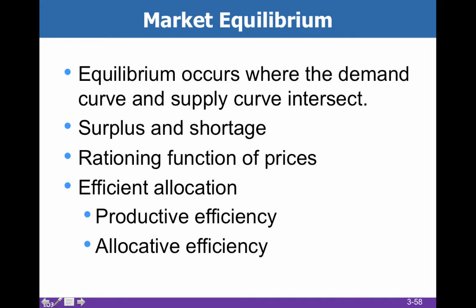Now equilibrium — you've already seen this. We've already talked about it. But now we have our downsloping demand and our upsloping supply. The intersection of the two is what we call the market clearing price or the equilibrium. This is the price at which demanders and suppliers agree, and we have no surplus and no shortage.